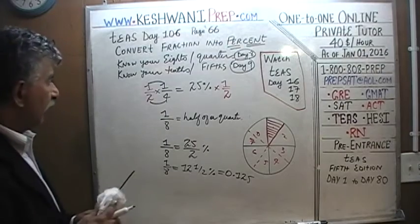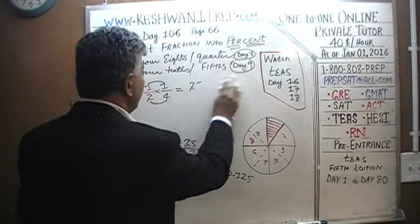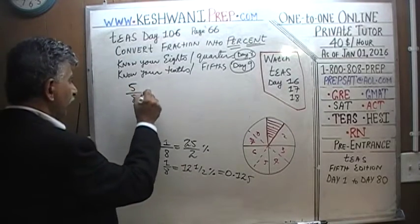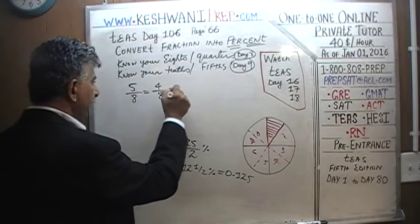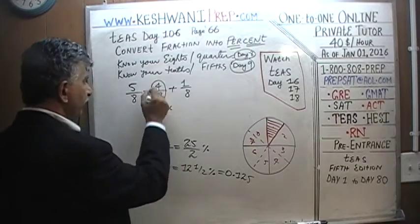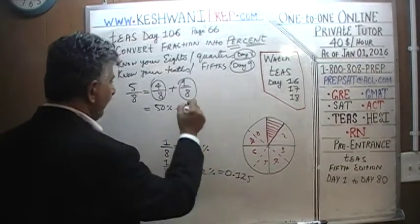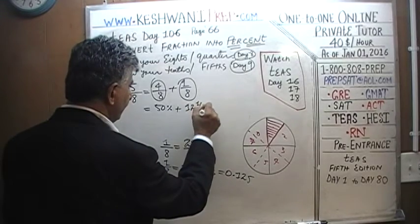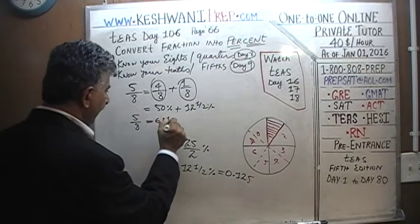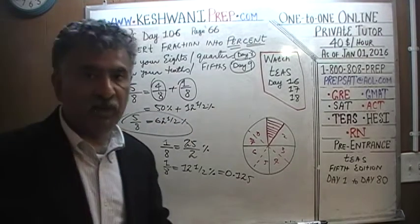Let's finish the problem: five-eighths. Five-eighths is simply made up of four-eighths and one-eighth. Four-eighths we know is 50%, and one-eighth we just found out is 12 and a half percent. So five-eighths must equal 62 and a half percent.